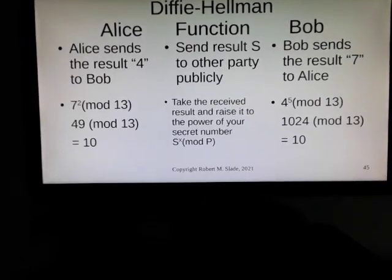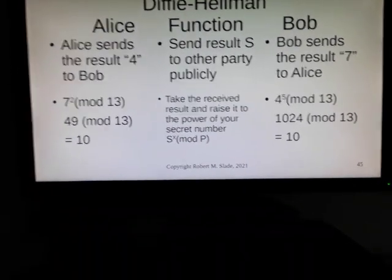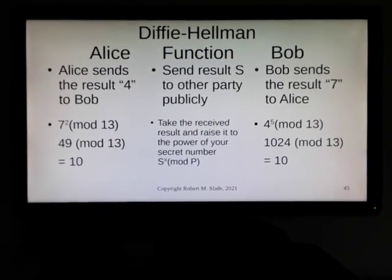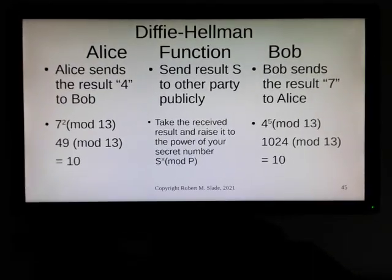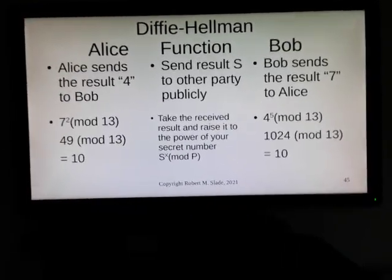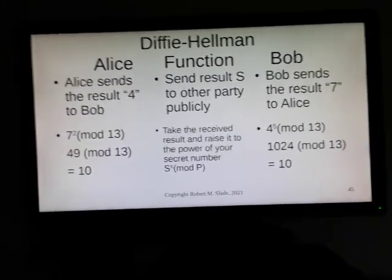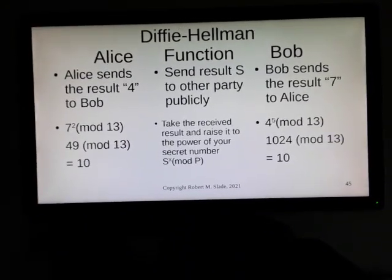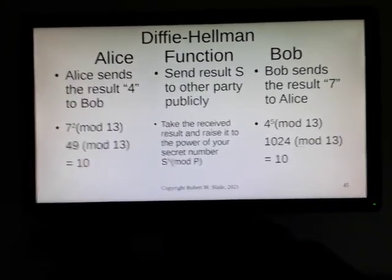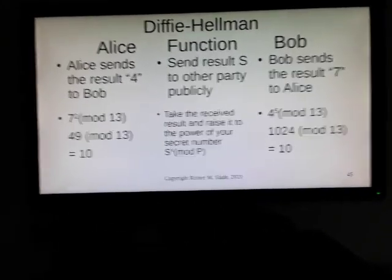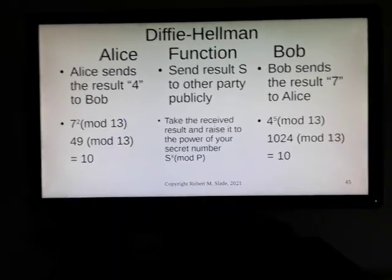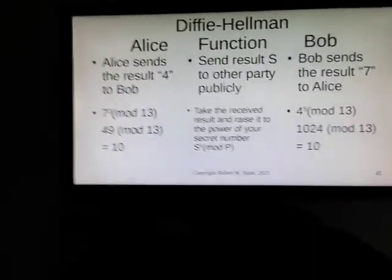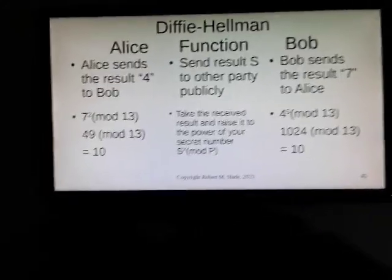Alice and Bob, by communicating certain numbers but holding others secret, are able to come up with this shared key. The original Diffie-Hellman was just for key exchange — or more precisely, key calculation, key distribution by calculation, whatever you want to call it. They aren't actually exchanging the keys; they don't need to. They exchange the public information and do the calculations based on their own secret parameters. The result is a common key that they can both use. This is how the Diffie-Hellman function actually works, and you can see the arithmetic and the result right there.